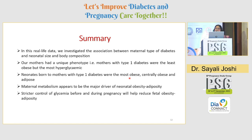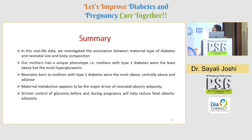To summarize, in this real-life data we investigated the association between maternal type of diabetes and neonatal size and body composition. We found that mothers with type 1 diabetes were the most hyperglycemic but the least obese, and neonates born to these mothers were the most obese, centrally obese, and adipose. Thus, maternal metabolism appears to be the major driver of neonatal obesity and adiposity. This calls for stricter control of glycemia before and during pregnancy to reduce neonatal obesity and adiposity.